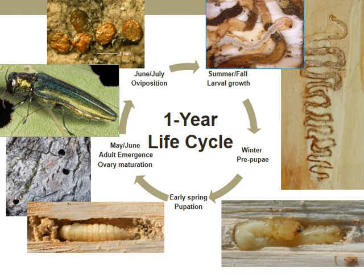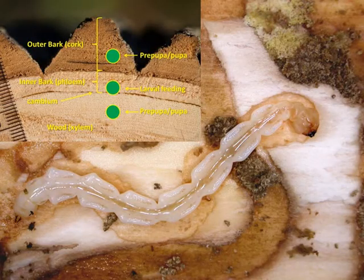The EAB goes through complete metamorphosis and has one generation per year with some exceptions. The adults emerge in May or June and feed on the tree's leaves between June and August. The female beetles lay their eggs on the bark of ash trees in the summer; the eggs hatch in seven to ten days. The larvae burrow into the tree and tunnel in the inner bark, creating extensive galleries that disrupt the flow of water and nutrients — this is what kills the ash tree. Larvae overwinter as pre-pupae, and pupation begins in late April or May. The larvae grow up to an inch long and are distinctive by their bell-shaped body segments.